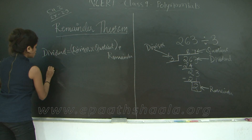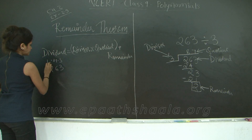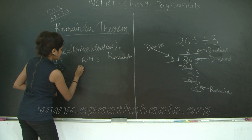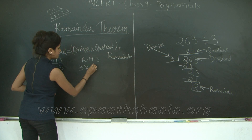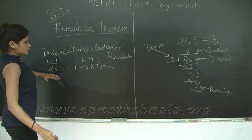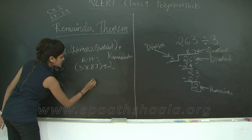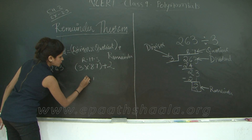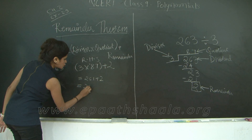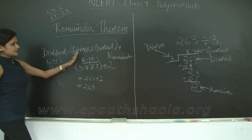Our dividend was 263 — that is the left-hand side. On the right-hand side, the divisor was 3, the quotient was 87. So 3 into 87 plus 2. 3 sevens are 21, 3 eights are 24, giving 261 plus 2, which equals 263. The left-hand side equals the right-hand side, so this equation is verified.